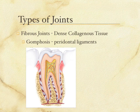The third type of fibrous joint is the gomphosis, and basically the only place we find this is where the teeth are attached into the jaw.